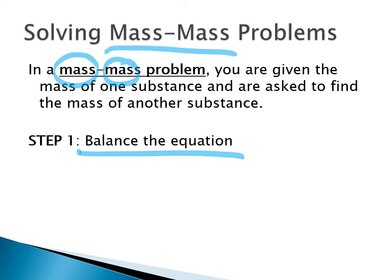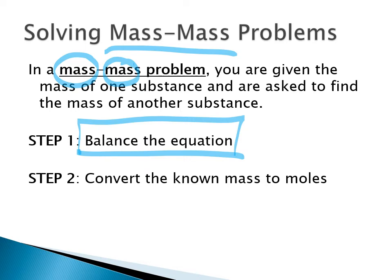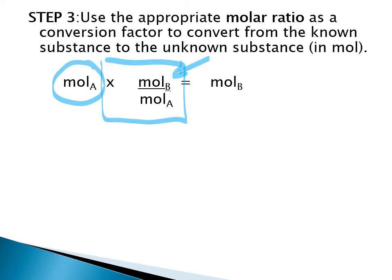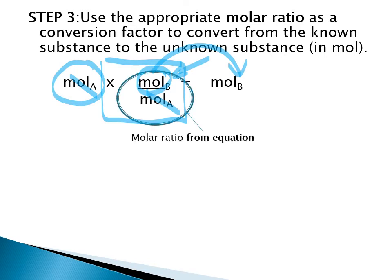First thing to do: you must have a balanced chemical equation — that is the situation you're describing. You need it to know the ratio of species and how they are reacting. Then take the given mass and convert it to moles, because the balanced chemical equation gives a molar ratio. Once you have moles, use a conversion factor from the balanced chemical equation to cancel the moles of your starting substance and convert to moles of what you're looking for — that's the mole ratio step.